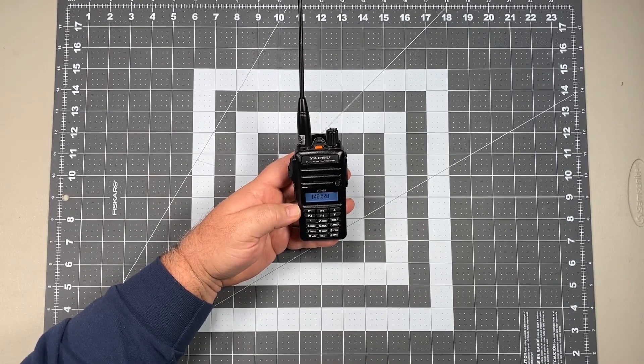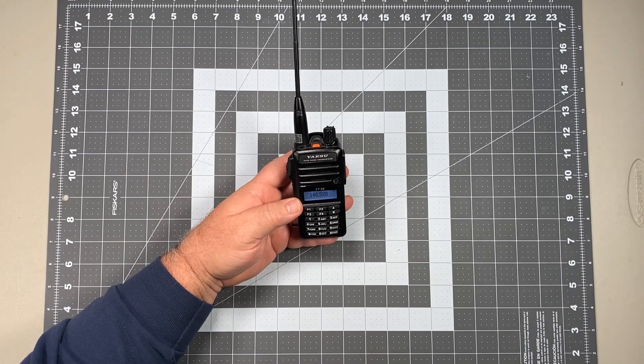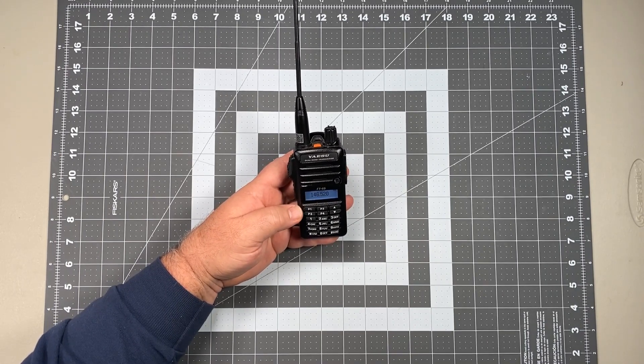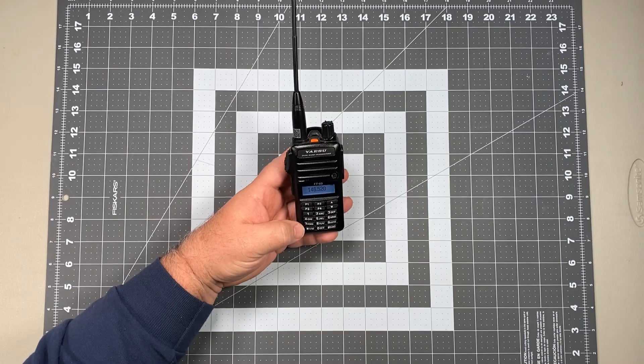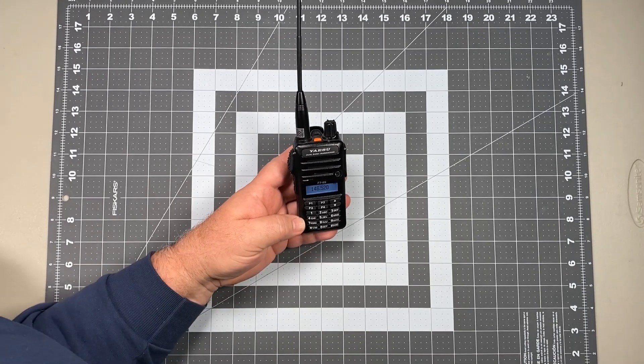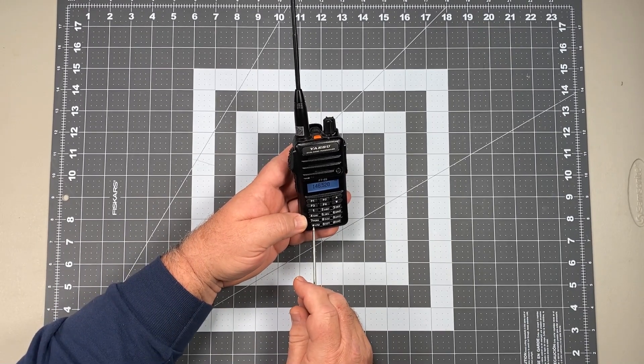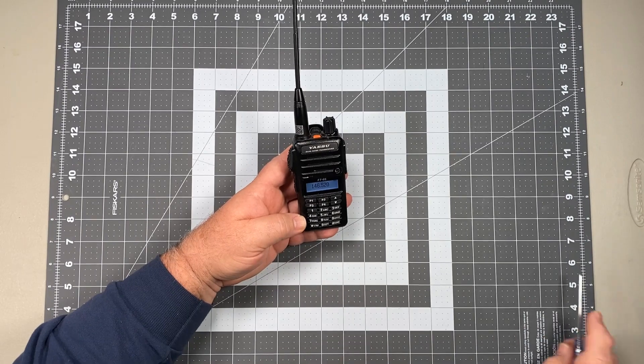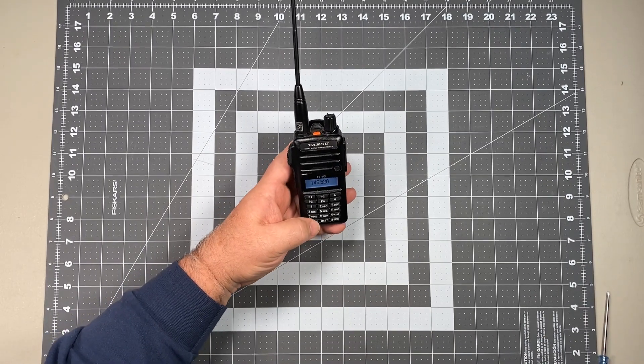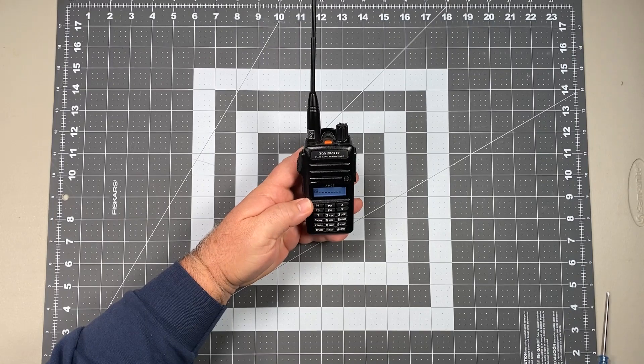But we want to go ahead and store this as a memory channel. So once you put the frequency in, we're not dealing with any offsets or anything. All we're simply going to do to move this to a memory channel is down here at the bottom left hand corner, the VM key. We're going to go ahead and hold that down, and that takes us to the next available memory channel.